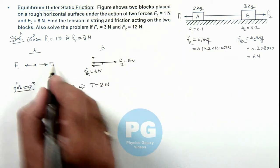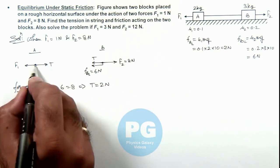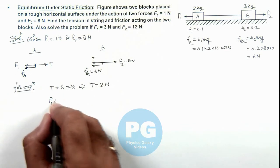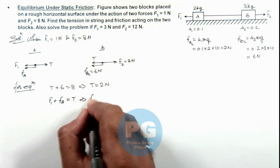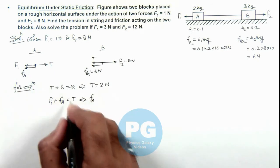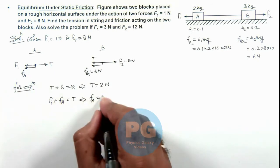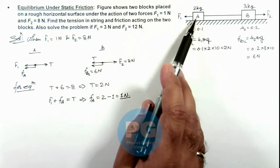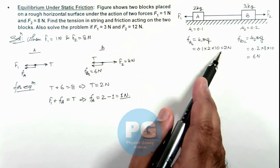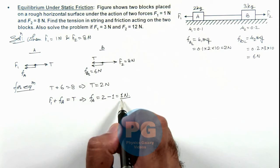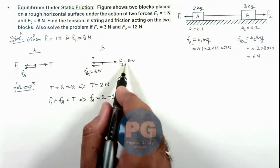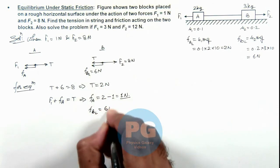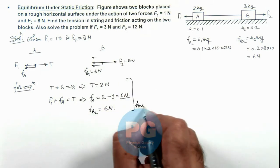For block A, as T is 2 newton it'll have a sliding tendency toward right, so friction will act on it toward left, say this is F_A. We can write F1 plus F_A equals T, which implies the friction acting on block A is T minus F1, that is 2 newton minus 1 newton, so this is 1 newton. As friction on block A is 1 newton which is less than the limiting value, it is static friction acting on A. But for block B, as the external force exceeds limiting friction, friction on B is the limiting value, that is 6 newton. These are the results for the first part of the problem.